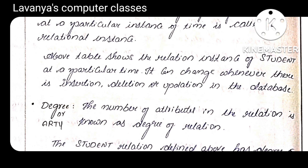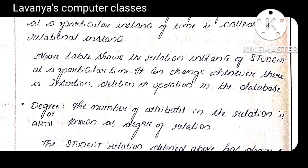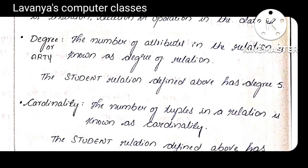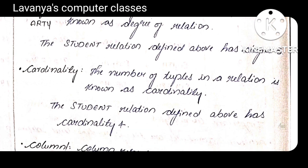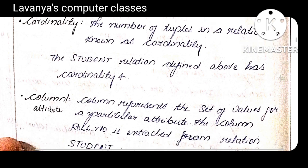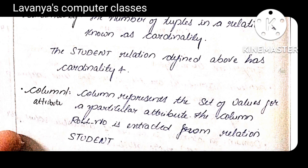Relation instance: the set of tuples in a relation at a particular instance of time is called an instance — whatever operations are performed at that particular moment. Degree: degree means the number of attributes (fields) in a relation. For example, if a student table has three fields, the degree is three. Cardinality: cardinality means the number of tuples in a relation — how many records are stored. In the above table, cardinality is four and degree is five.